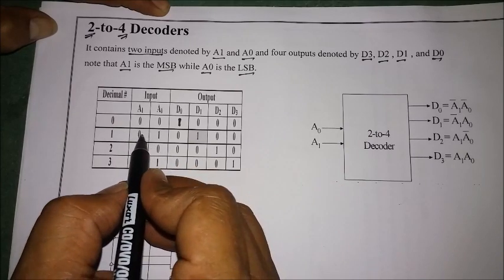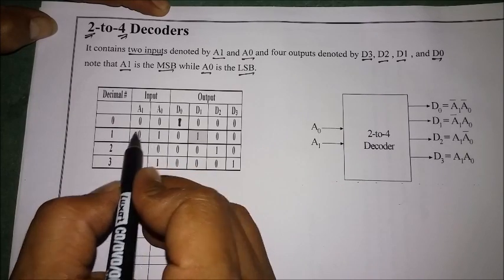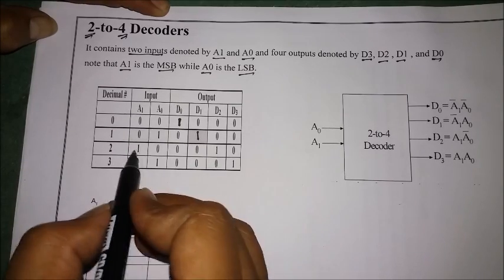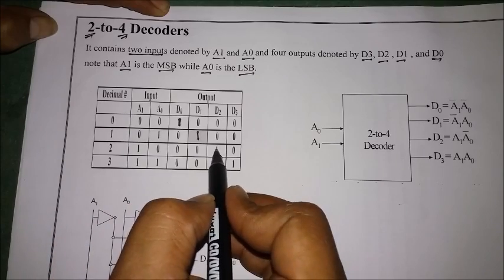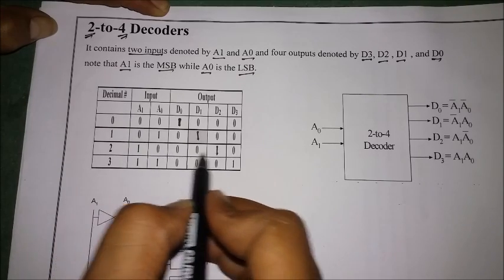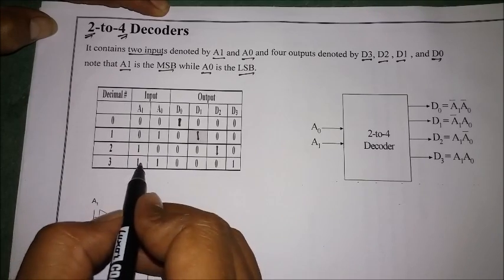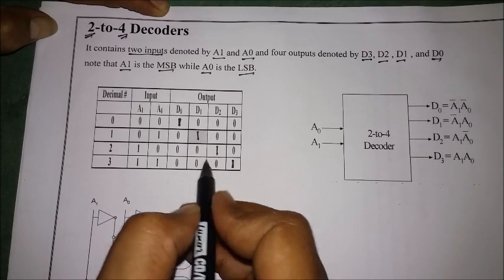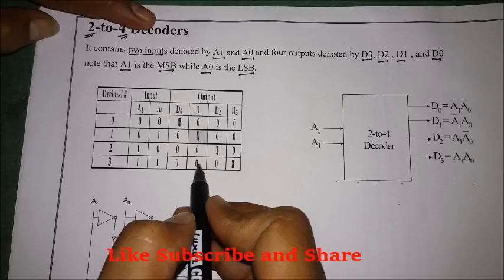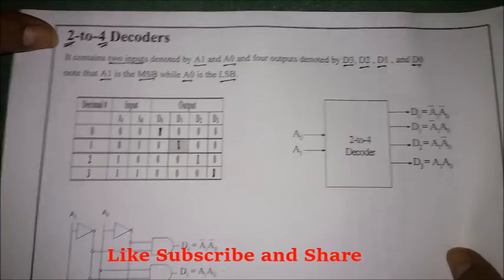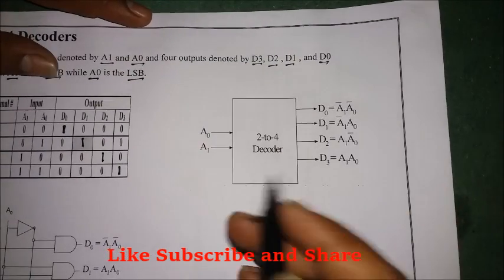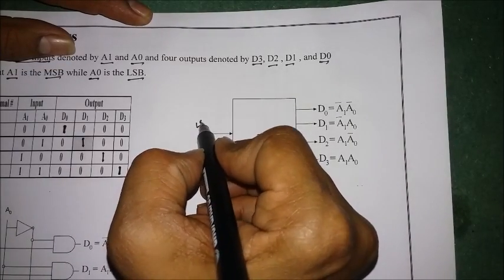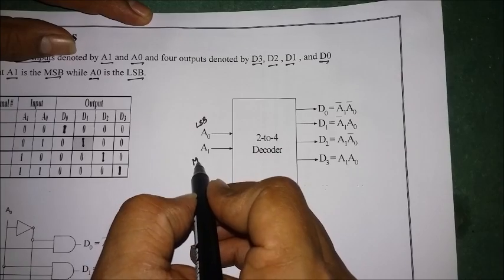When input is 01, D1 is high and the rest are low. When 10 is given, D2 is high and the rest are active low. When 11 is given, D3 is high and the rest are zeros. Now looking at the block diagram for the 2-to-4 line decoder, there are two inputs — one is the LSB and the other is the MSB.